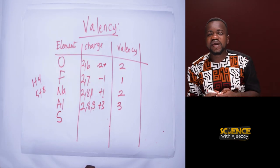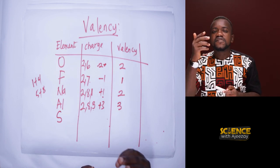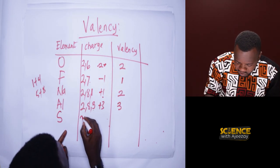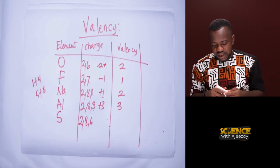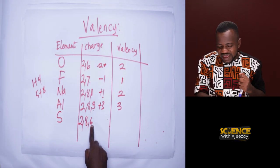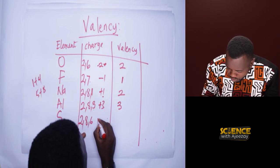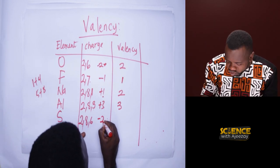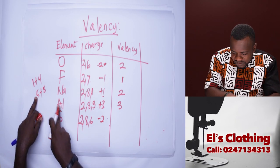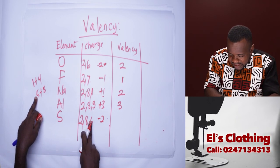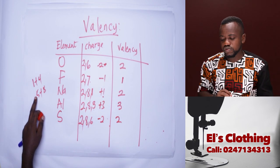Let's take sulfur, which is element 16. Its configuration is 2, 8, 6. Sulfur needs two more electrons to be stable, so its charge will be minus two. Using the rule, eight minus six gives two. The valency of sulfur is two.